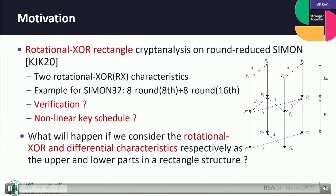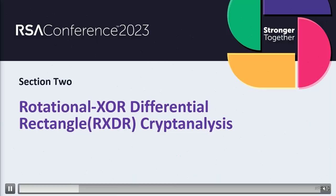However, the authors did not perform experiments to verify validity. RX characteristics are used in both upper and lower parts of the rectangle; for ciphers with nonlinear key schedules this results in a very small weak key space. This inspired us to consider what would happen if we use RX and differential characteristics respectively in the upper and lower parts of a rectangle structure.